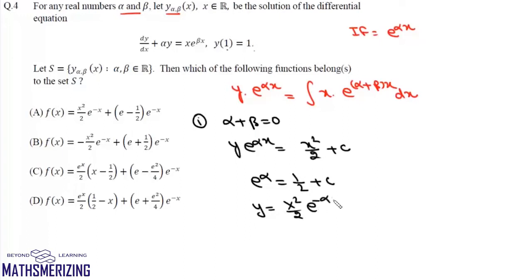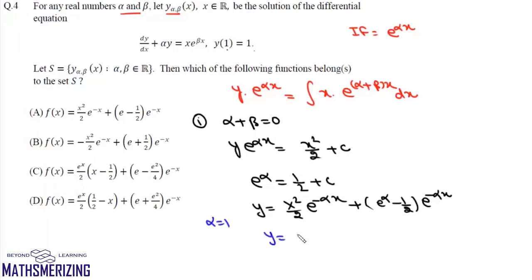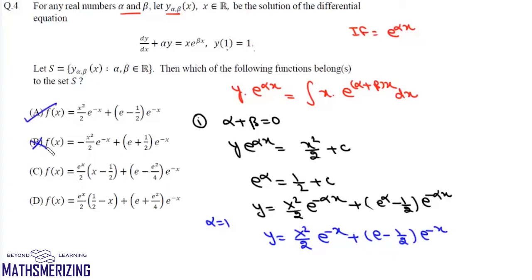For option A, we put alpha = 1. Substituting alpha = 1 gives y = (x²/2)·e^(-x) + (e - 1/2)·e^(-x), which matches option A. So option A is correct, and option B is incorrect. We now take the second case when alpha + beta is not equal to zero.